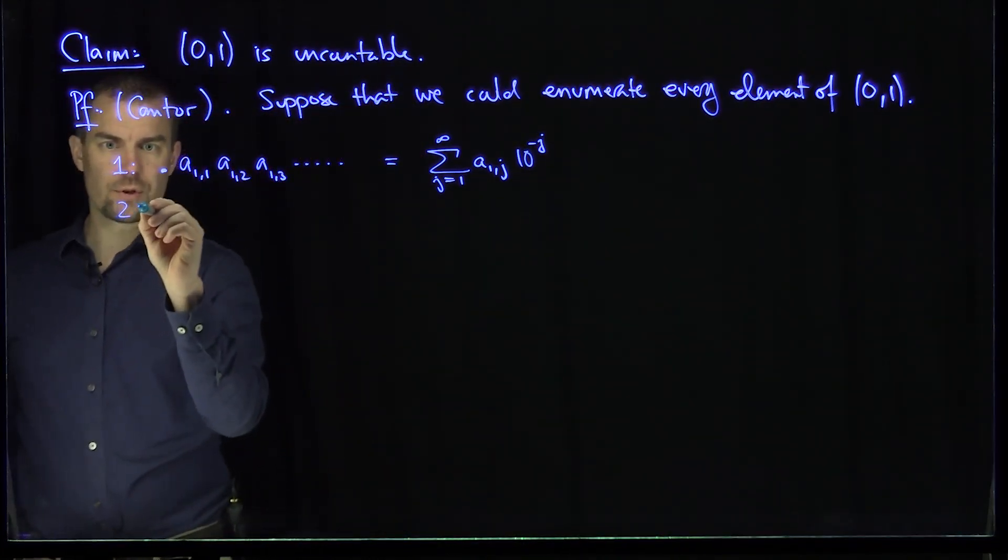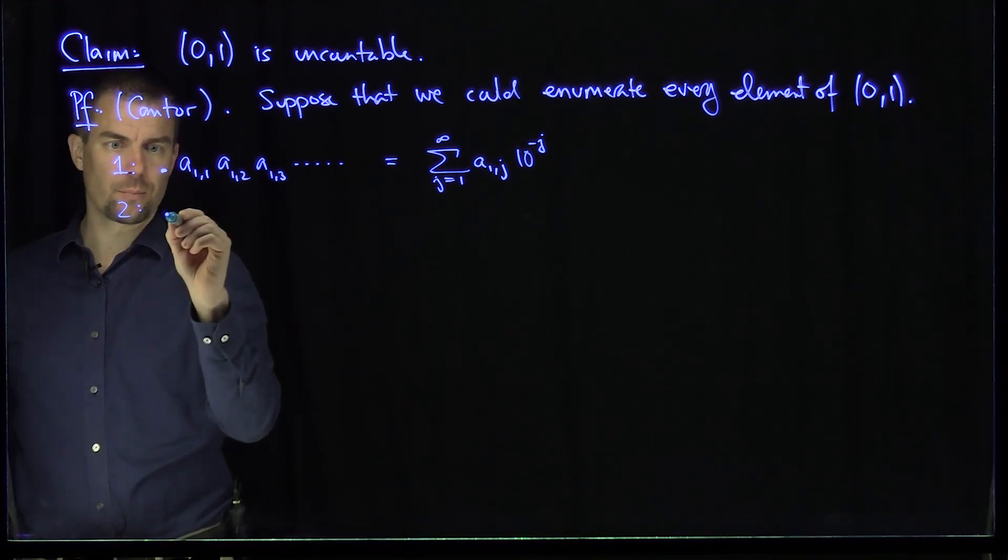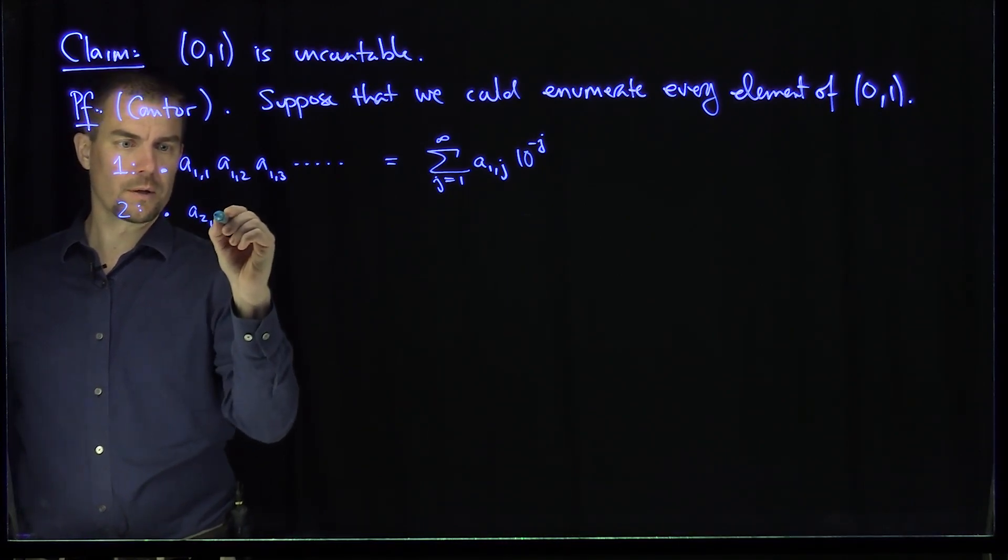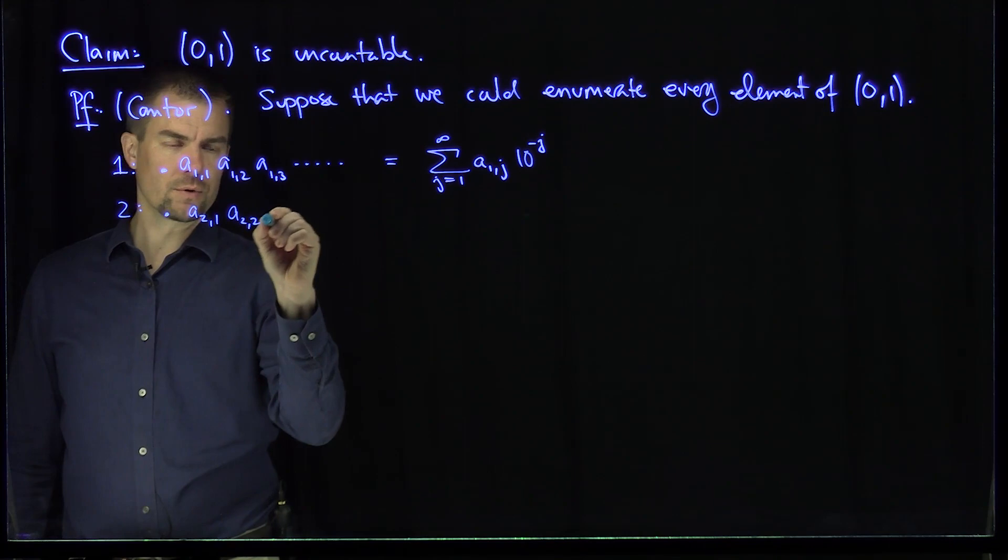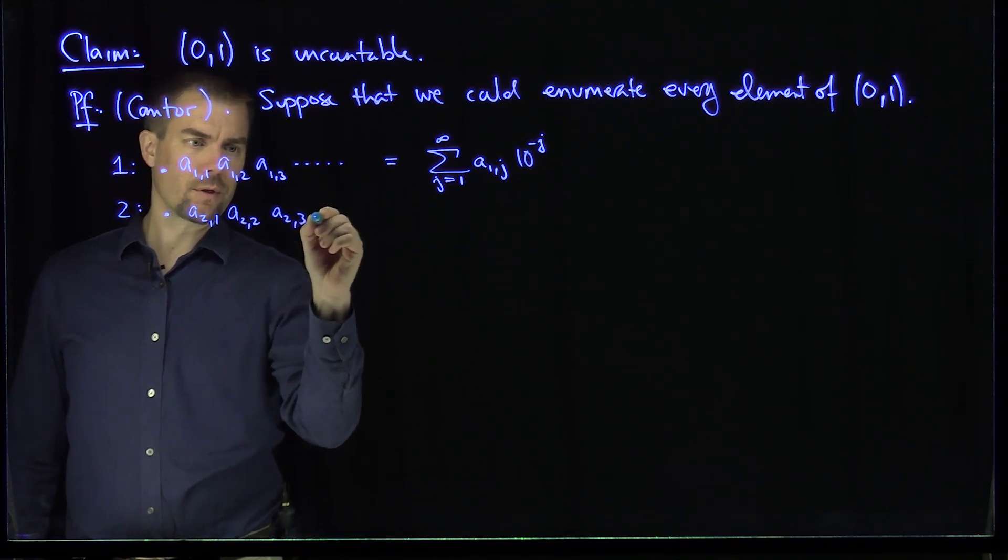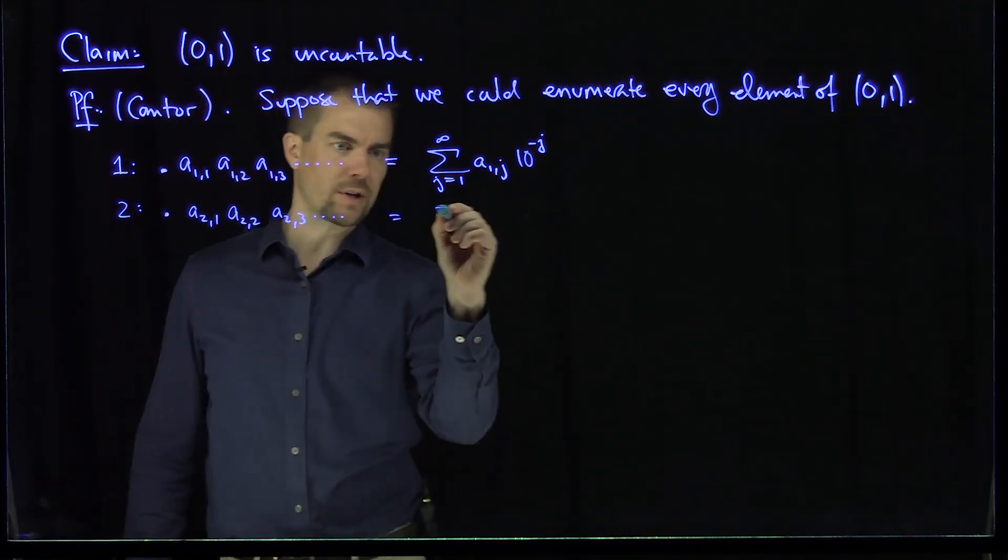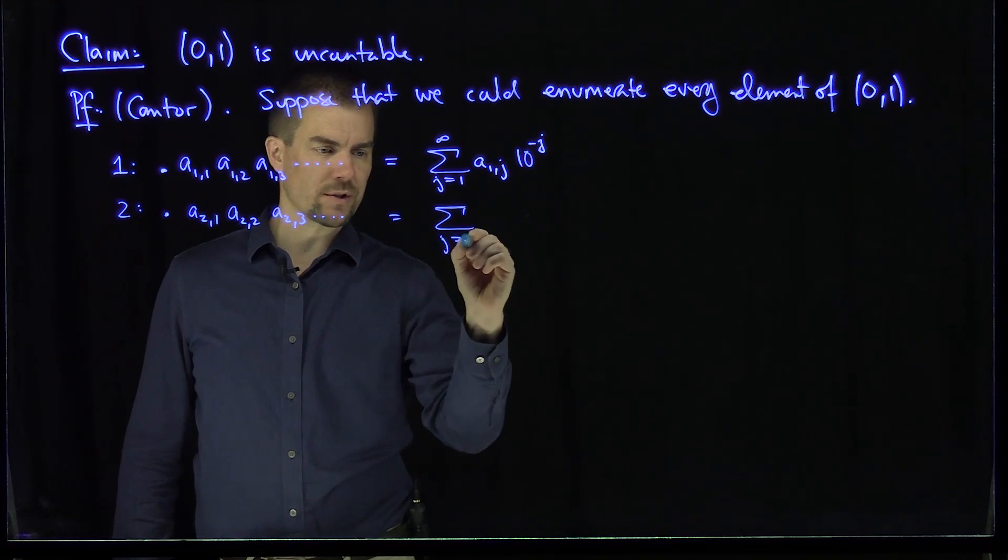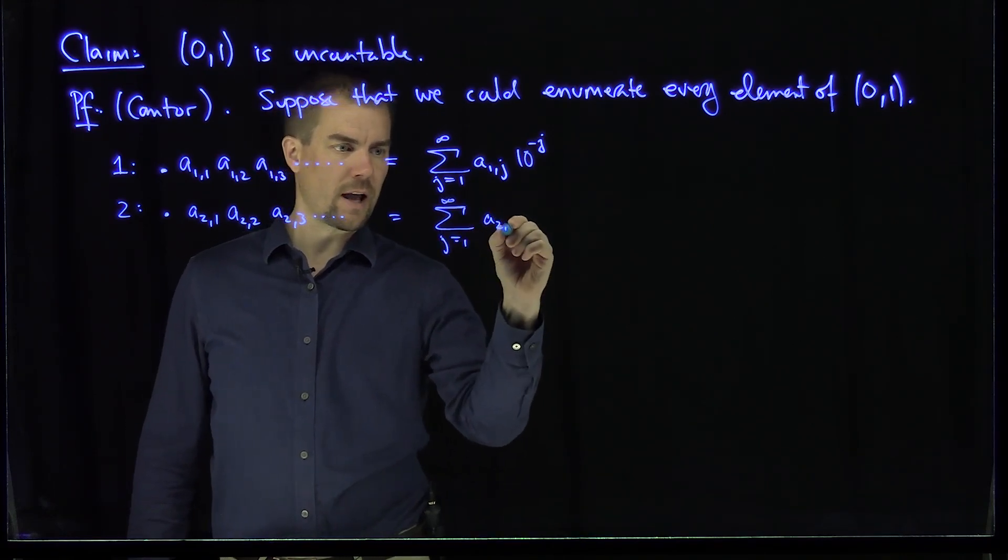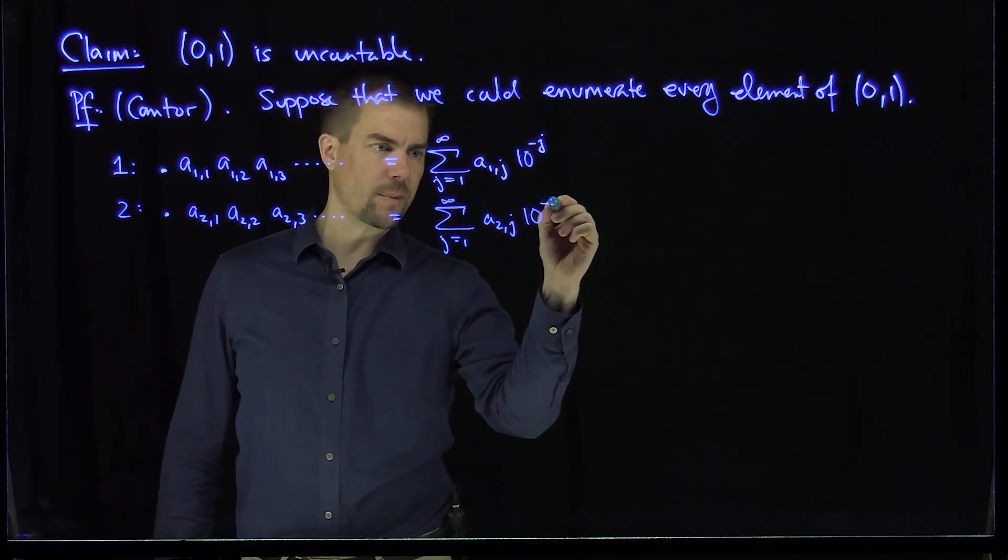The representation of the next number, where we map 2, is going to be point a21, a22, a23, and so on forever. Its decimal representation is the sum from 1 to infinity of a2j times 10 to the power negative j.